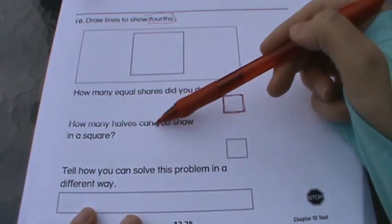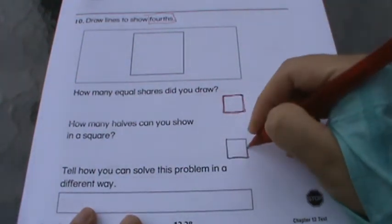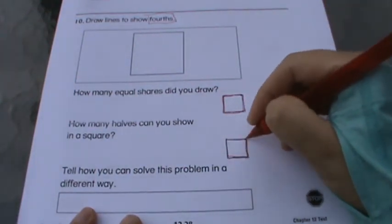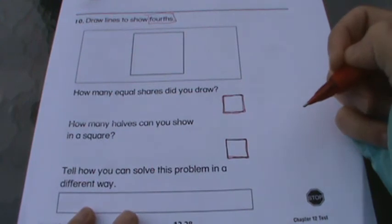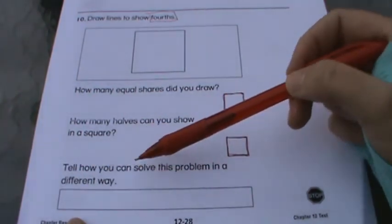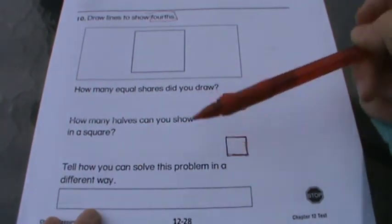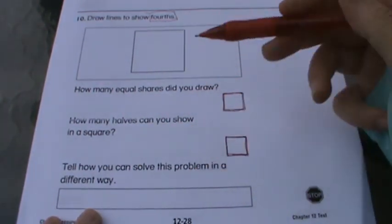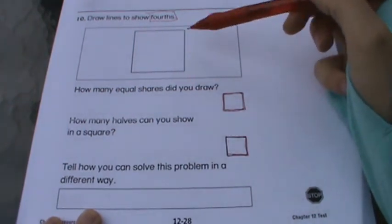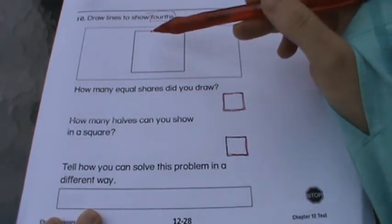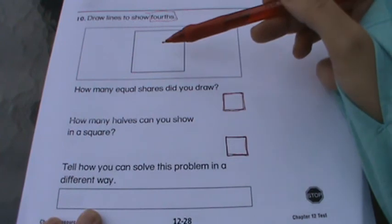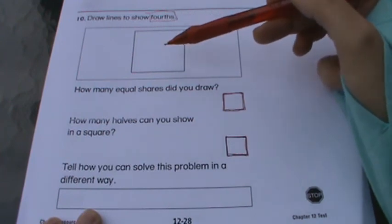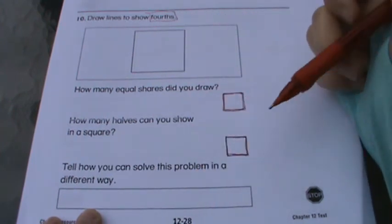How many halves can you show in a square? Put a number here. How many halves can you show in a square? And then tell how you can solve this problem in a different way. So to me, that's asking you what's a different way to divide this square into fourths? So what's another way you could have solved that out?